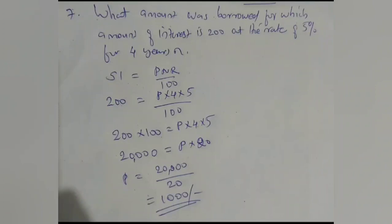Okay, let us move on to the last question in the simple interest section. I think it is question eight. What amount was borrowed for which amount of interest is 200 at the rate of 5 percentage for four years? Here we need to calculate the principal amount - what amount was borrowed.